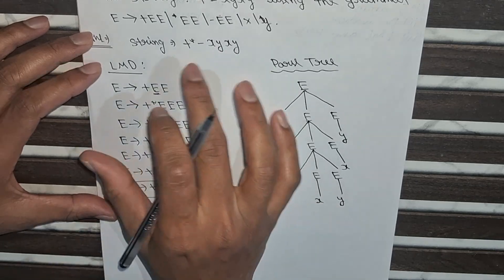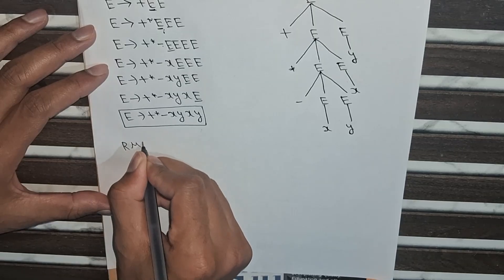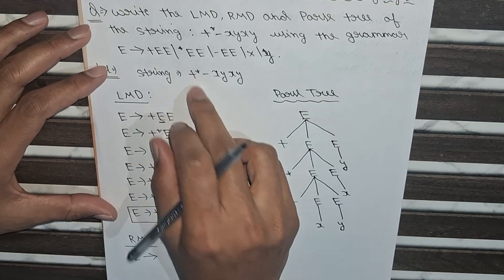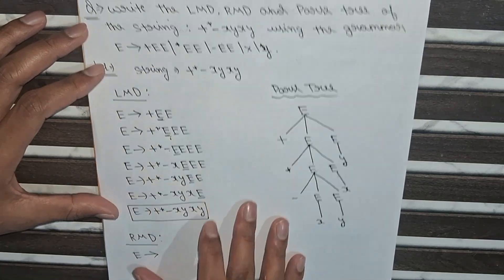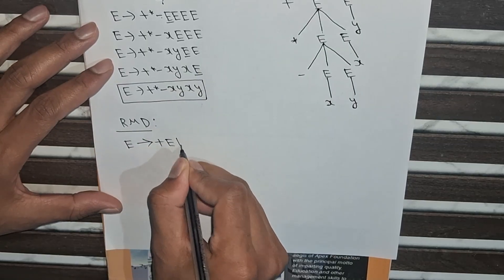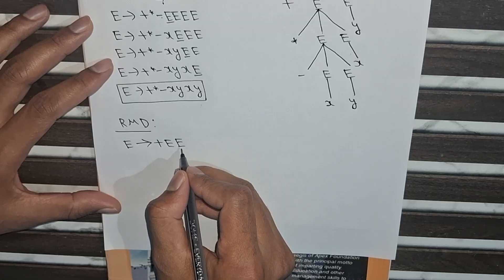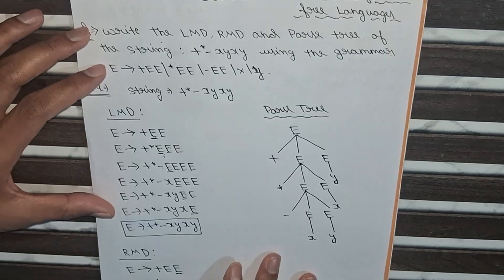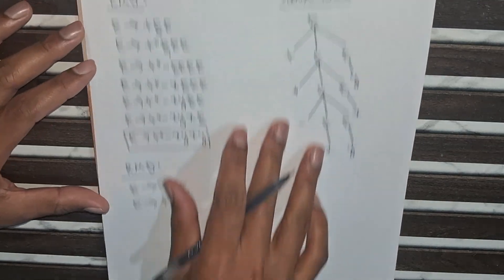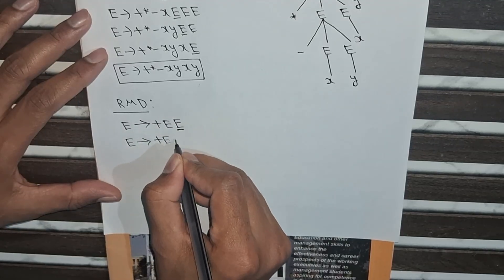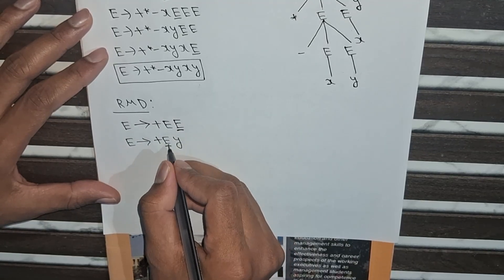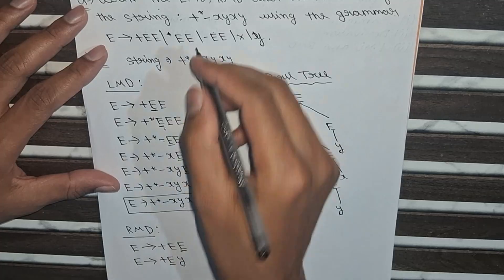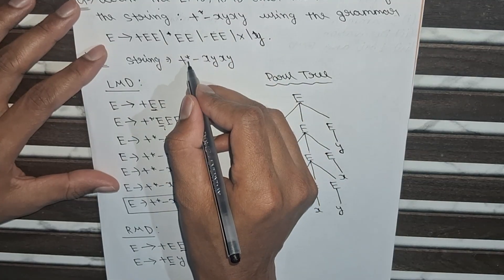Now I will make the RMD — rightmost derivation — for the same string. The first step will be the same because the first symbol is plus, so E implies +EE. As you know, in RMD you put the variable from the right side. From the right side we can see that y is there, so I will put the value of E as y: E and y. Now if I put the next E as x I am not able to get the whole string, so I will put the value of E as *EE since from the left side I want star.